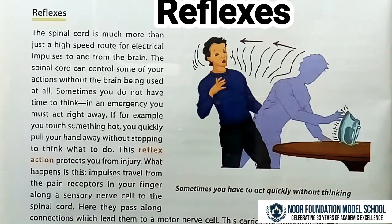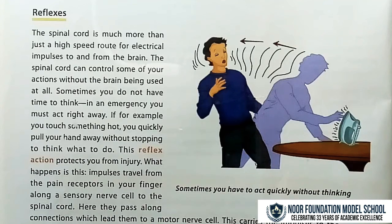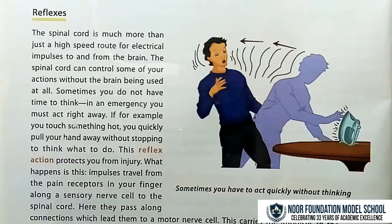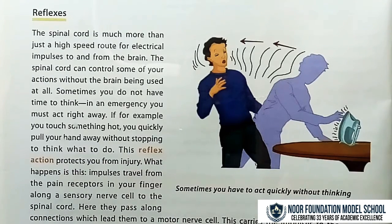The spinal cord is much more than just a high-speed route for electrical impulses to and from the brain. The spinal cord can control some actions without the brain being used at all. Sometimes you do not have time to think — in an emergency you must act right away. For example, if you touch something hot, you quickly pull your hand away without stopping to think. This reflex action protects you from injury.